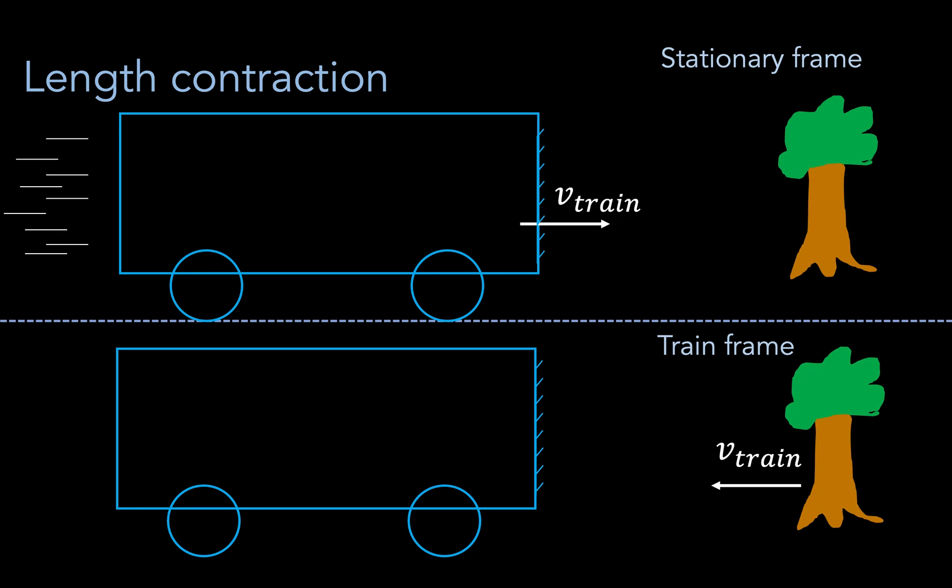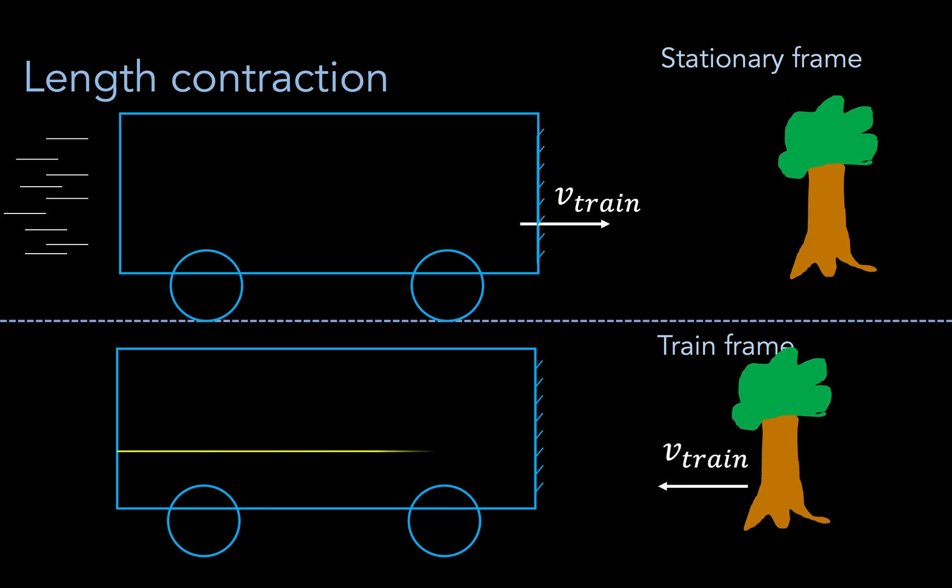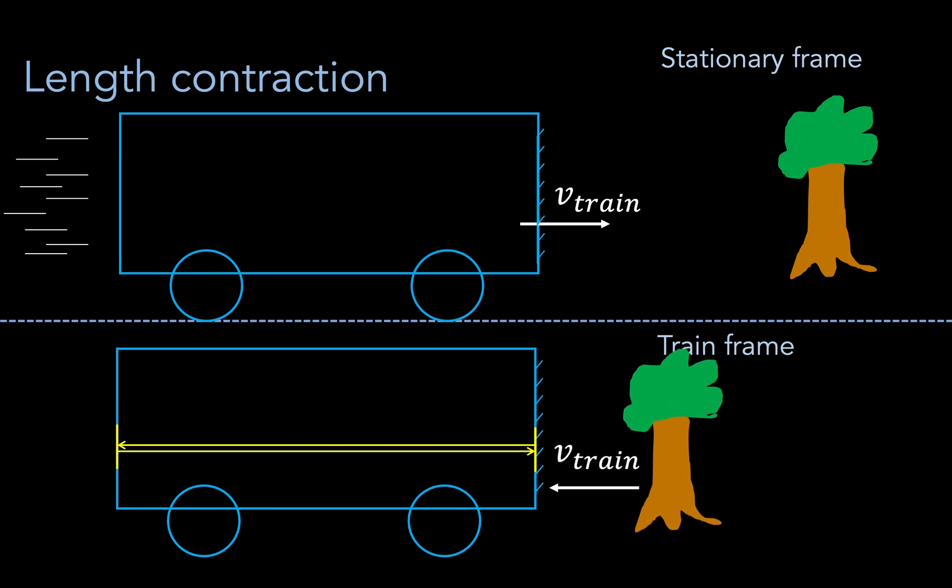Imagine that we're standing on a moving train and trying to measure the length of the train by firing a beam of light from one end to the other, which then bounces off a mirror and then comes back. This length L0 is then the speed of light multiplied by the path time T divided by 2, and we can express this in the equation T equals 2L0 over c, where T is the total time of the path.